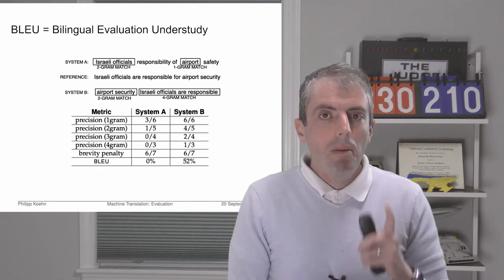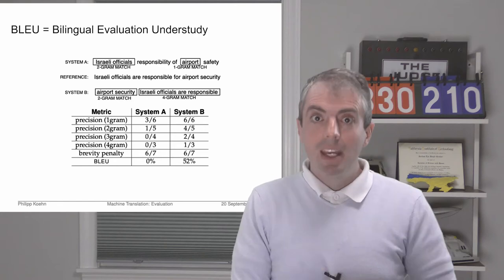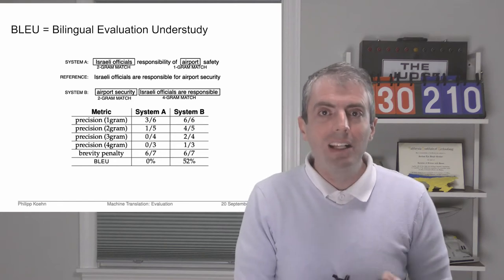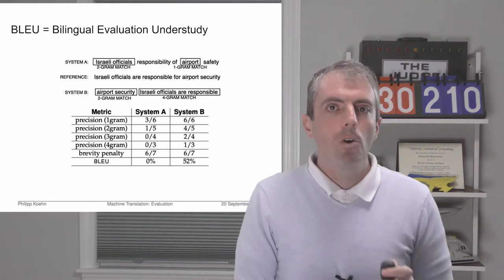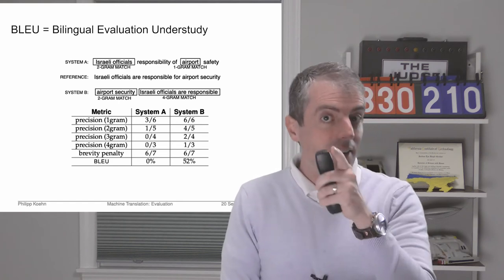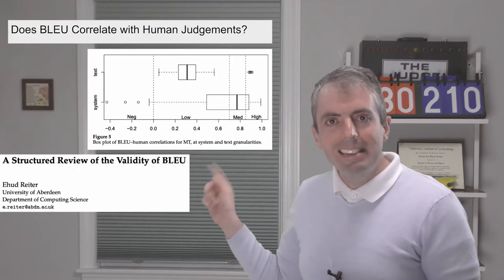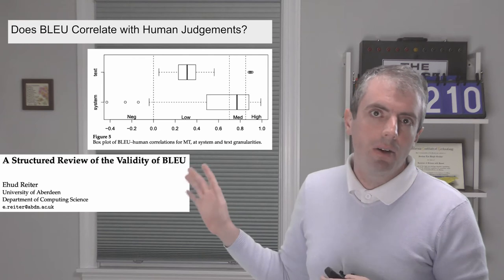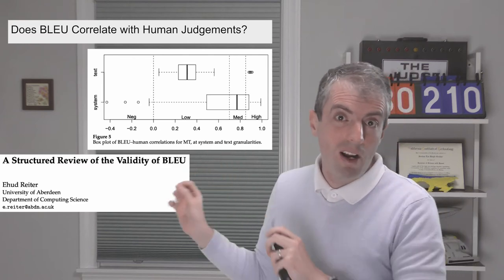But remember that the name of this metric in its long form is Bilingual Evaluation Understudy. So it's supposed to fill in for the human evaluations that are, don't forget, the gold standard. So while you can get a good correlation on systems, Ehud Ryder showed that the correlation for individual examples is quite a bit lower.